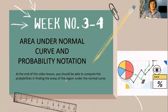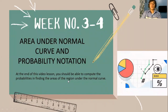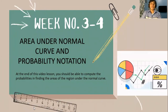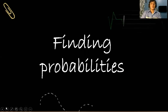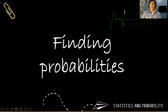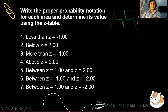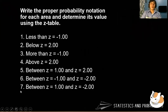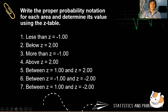At the end of this video lesson, you should be able to compute the probabilities in finding the areas of the region under the normal curve. So let's have sample counting probabilities. We will write the proper probability notation for each area and determine its value using the z table. These are our seven examples that we will be answering for this video lesson.